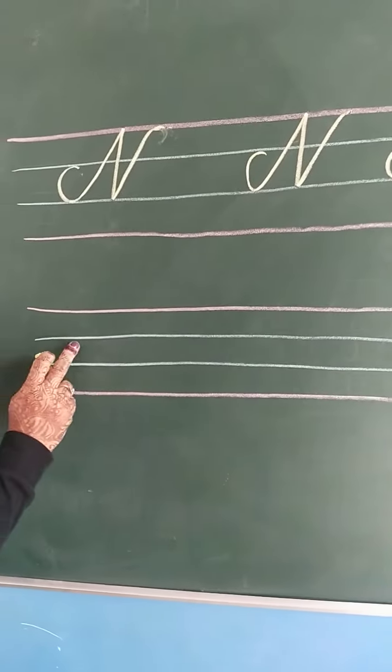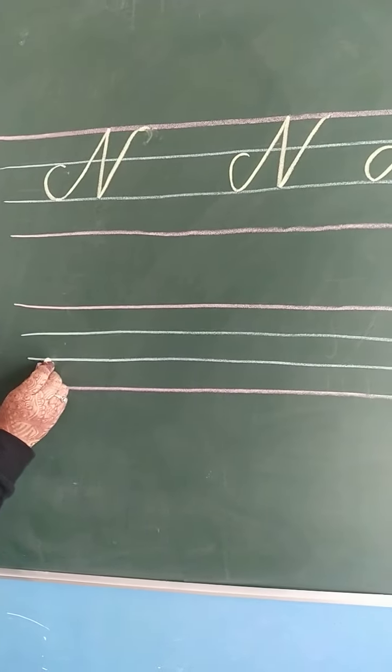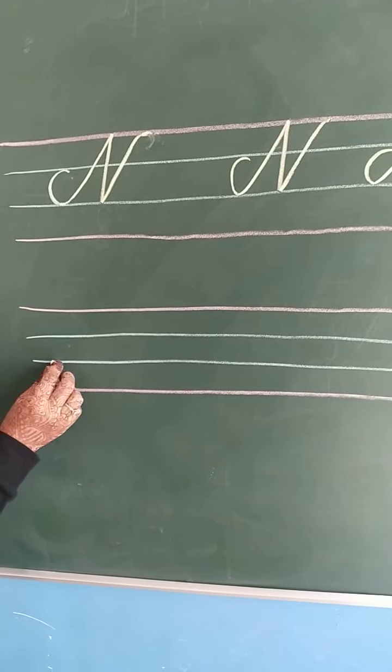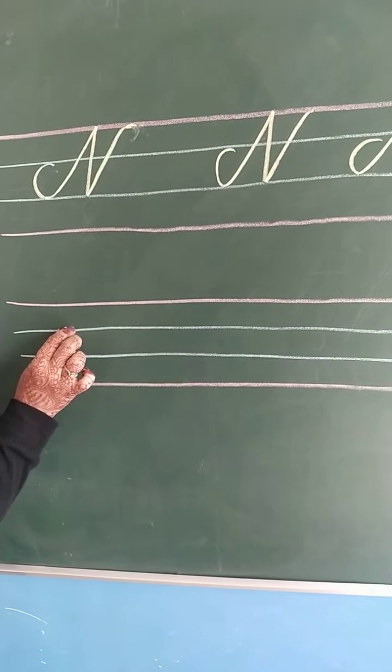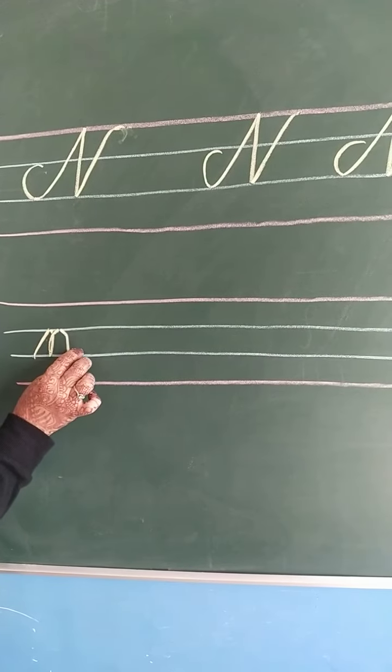Now, how to write small n. Start from this third line. Go up, then come down with a curve.